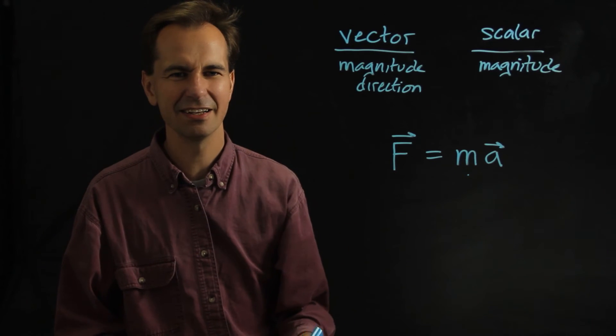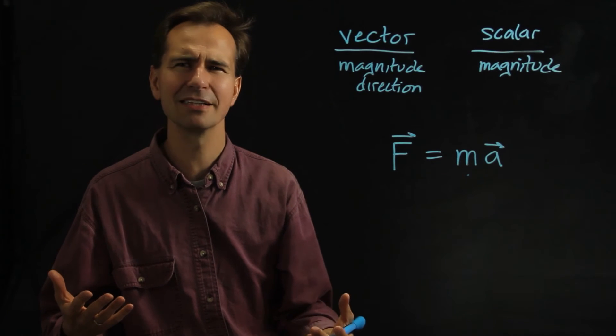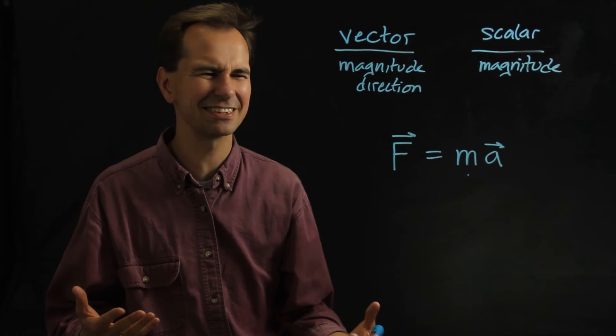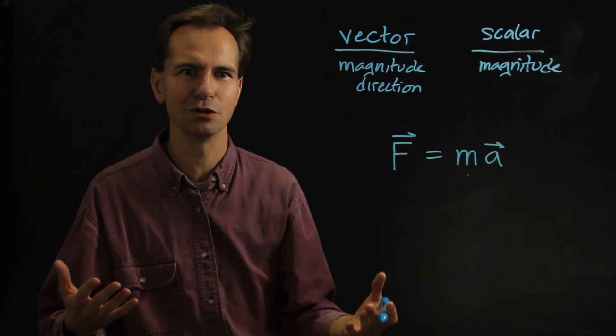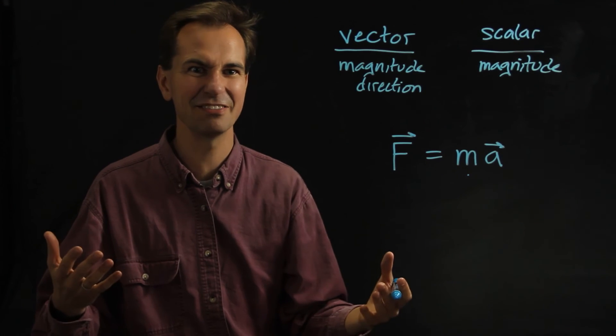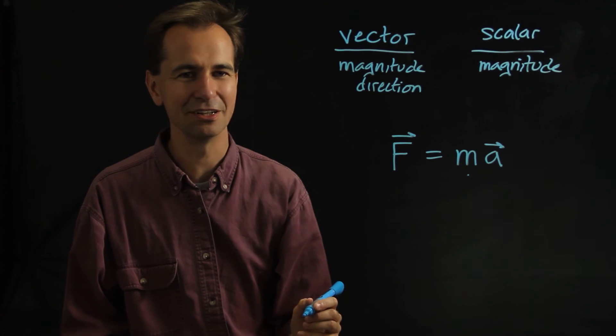Mass, on the other hand, just has a magnitude. For example, maybe something has a mass of 50 kilograms. That's its magnitude. But it doesn't really make sense to say that it's 50 kilograms in a certain direction. It's just 50 kilograms—it just sits there and doesn't have any direction associated with it. So when we write it in a physics equation, we don't include an arrow.